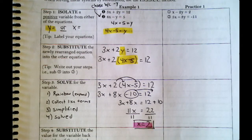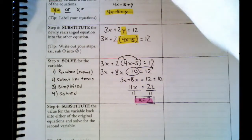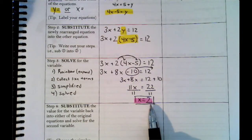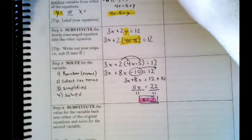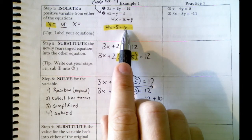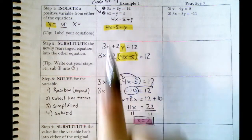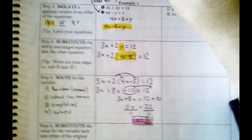Now we know x is 2, but when solving we need both x and y to form a point. Step 4 says: substitute the value we just got — x equals 2 — back into either of the original equations and solve for the second letter. The tip is to choose the simpler one. We already made one equation say y equals 4x minus 5, so if x is 2, then y equals 4 times 2 minus 5.